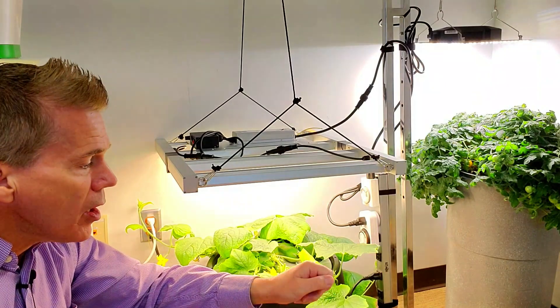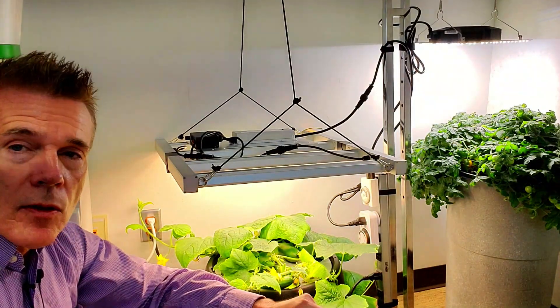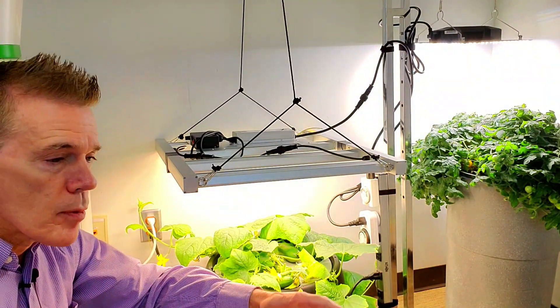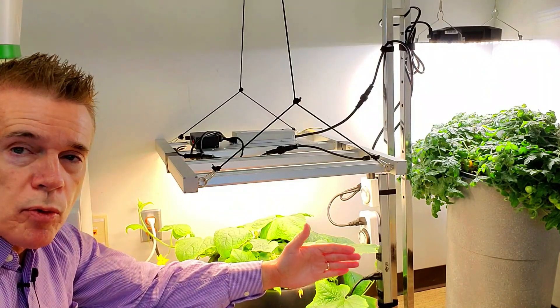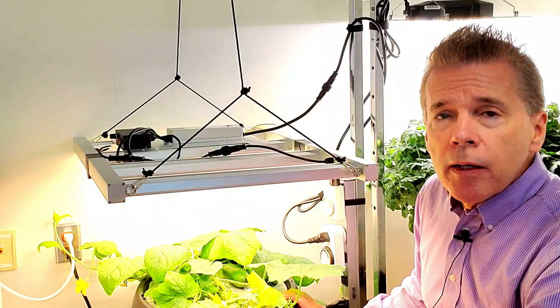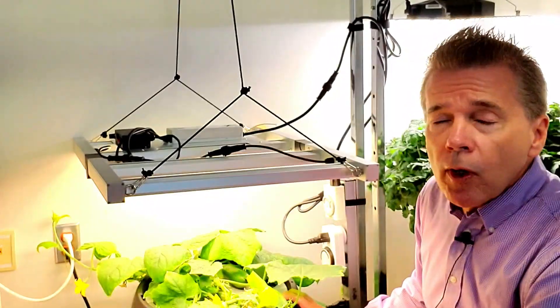You could set the dimmer knob to the reading that you'd like to have for the size of the plant or perhaps the height of the plant. I am not promoting any particular grow light.